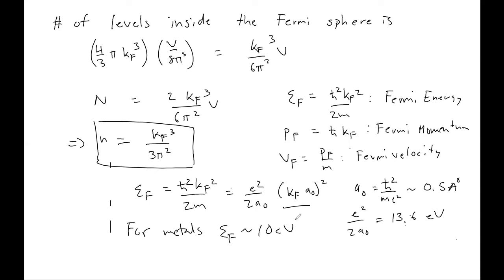If you ask what is the equivalent temperature TF = EF/kB, you find something like 10^4 Kelvin. Remember, room temperature is about 1/40 of an electron volt. This confirms that it is perfectly worthwhile and valid to think about the ground state properties of free electron gases, because metals at room temperature are to a very high degree of precision in the ground state configuration. The next mini lecture will talk about explicit calculations of the T=0 ground state properties of metals.